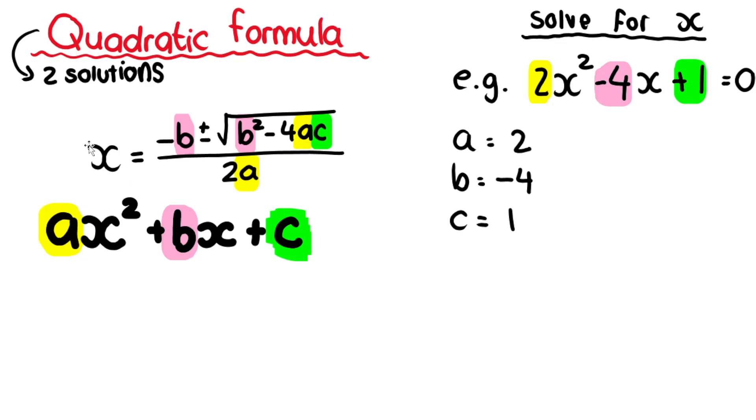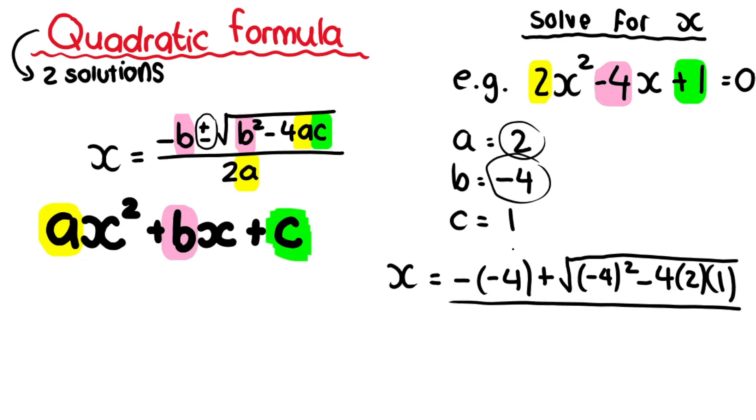You don't need to write out the quadratic formula on your paper; you can do this on your calculator. What you'll type is x equals negative B. B is negative 4, so put it in brackets: negative, in brackets, negative 4. Then plus (we'll change it to minus later). Then we've got the square root. B squared in brackets is negative 4 squared. Then minus 4 times your A value, which is 2, times your C value, which is 1, just like in the formula. Then divide all of that by 2A, so 2 times 2.